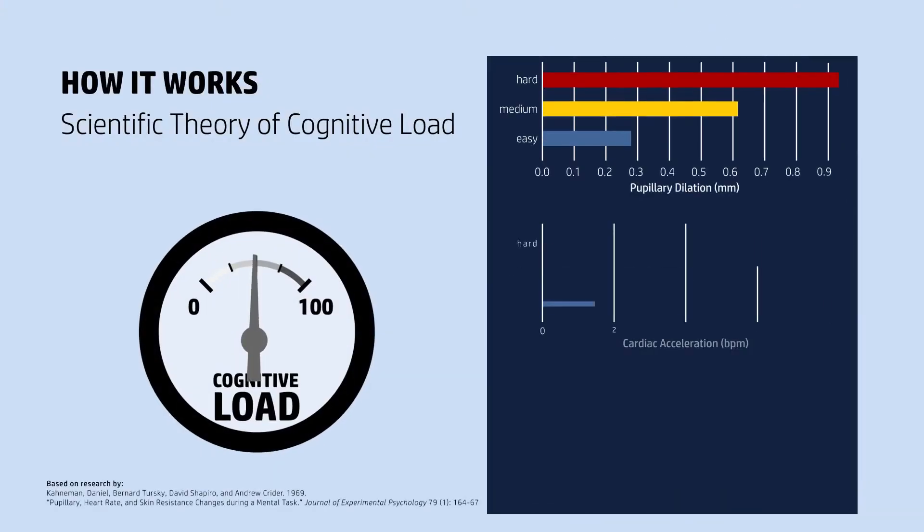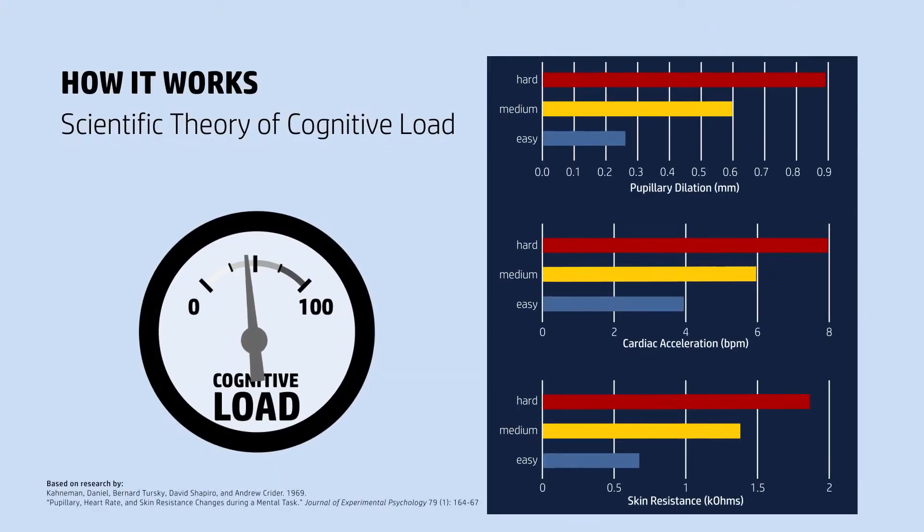One early and pioneering research finding showed that changes in cognitive load during tasks resulted in proportional changes in physiological signals across multiple biometric sensors that measure things like cardiovascular reactions and pupil dilation. When combined with participants' self-reported cognitive load, this developed a robust way to measure mental effort.